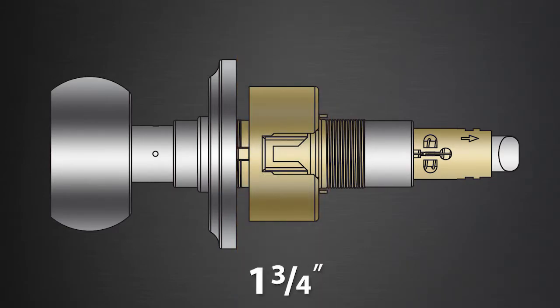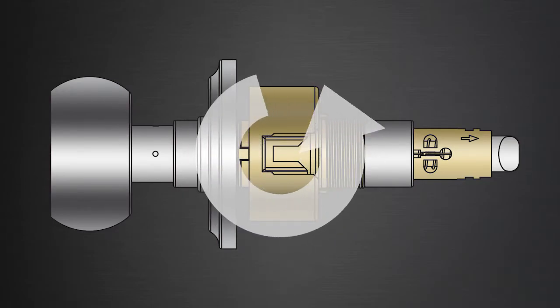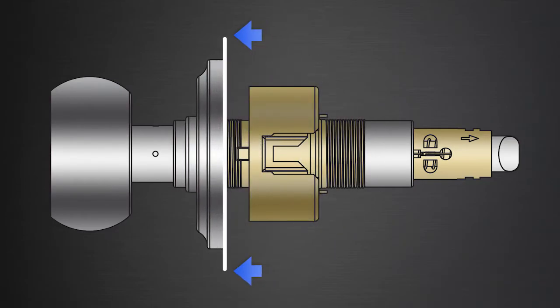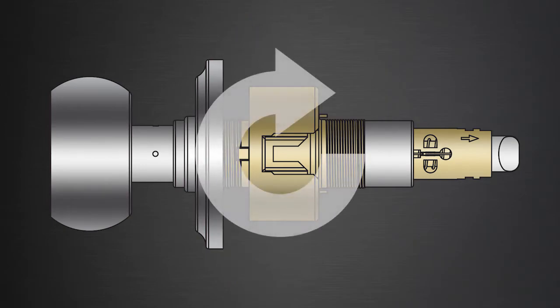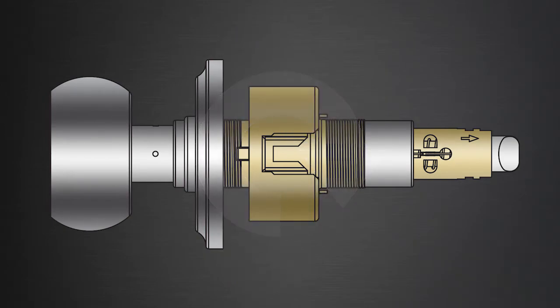On 1 3/4 inch thick doors, rotate the outside rows counterclockwise until it stops. Then turn the rows back one quarter of a turn to adjust it correctly for your door size.